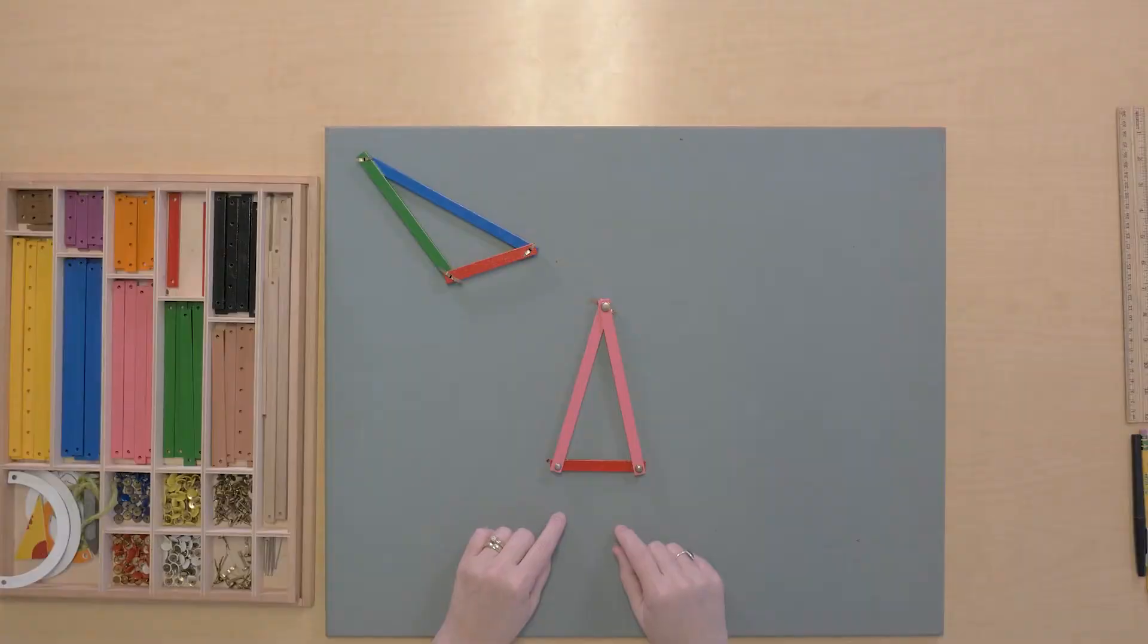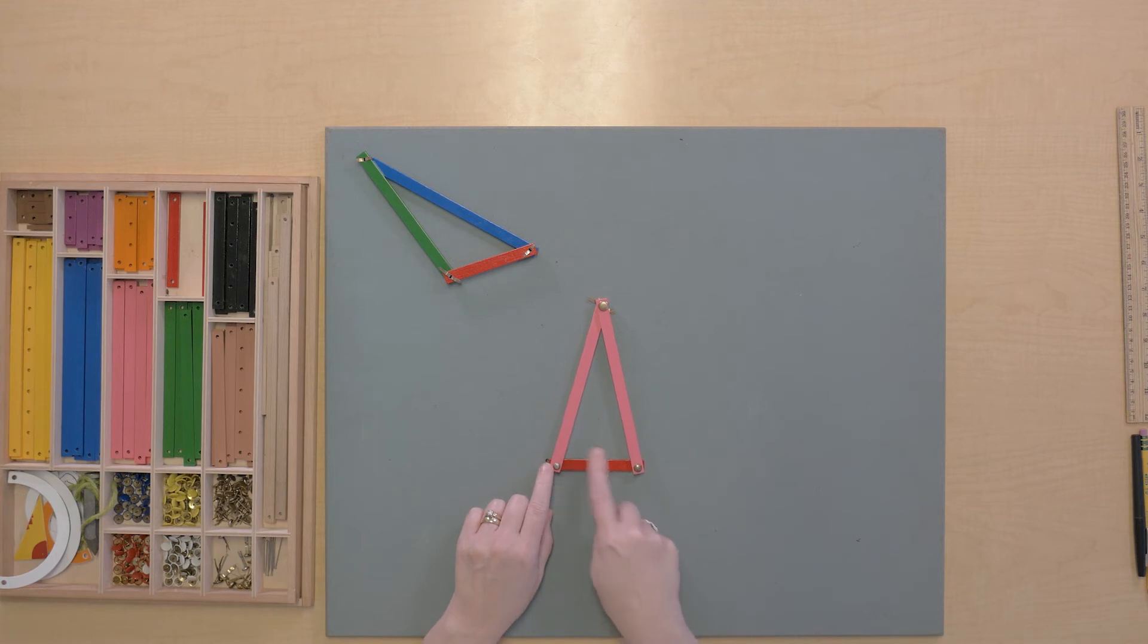What about this one? I can see that it has two sides the same length, but I can also see that all its angles are acute. So we could say this is an acute angled isosceles triangle.